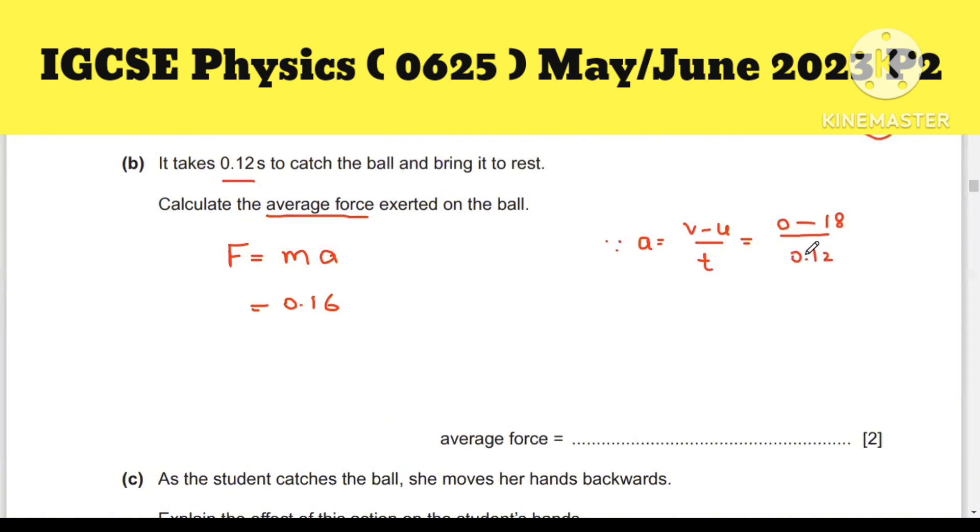Time is given, final speed is zero, initial speed is 18, and time is 0.12. So you will get -150 m/s^2, which is the unit of acceleration. This negative sign shows that this is deceleration. Put the values: multiply 0.16 by 150. You can ignore the minus sign at this point.